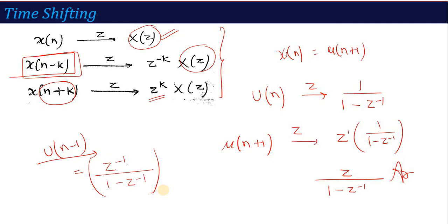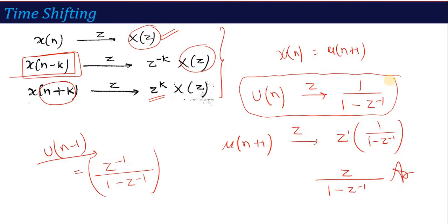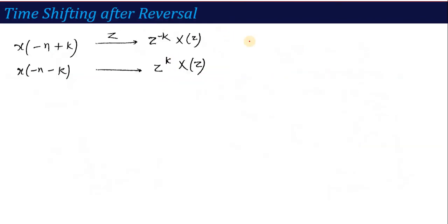The property is very easy because you only need to show the Z-transform of one basic signal, u(n), and then apply this property to get the result. Now we've done u(n+1) and u(n-1) — what if we need to calculate u(-n-1)? In this, two properties are involved: shifting as well as reversal.